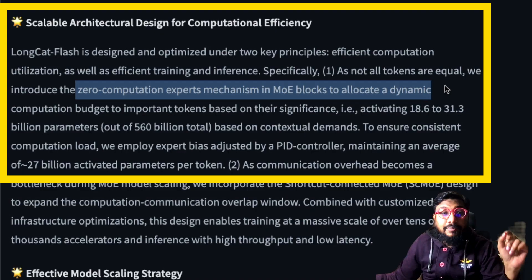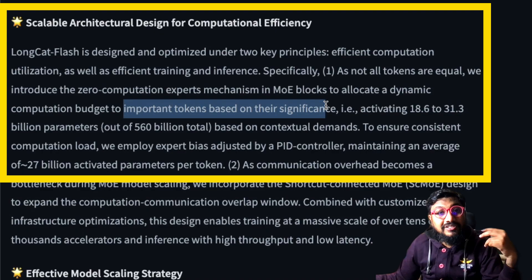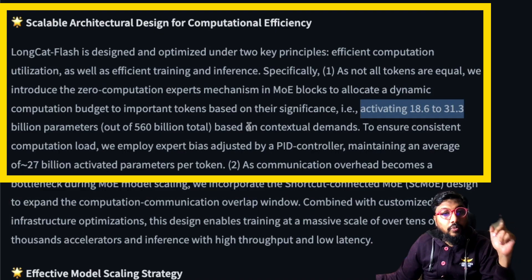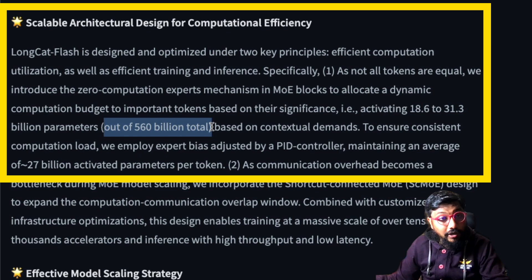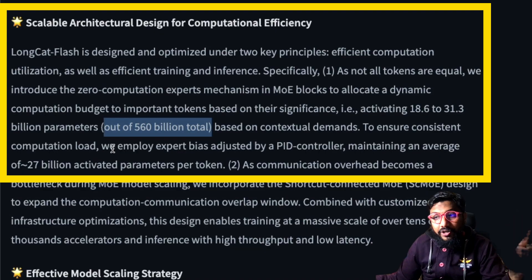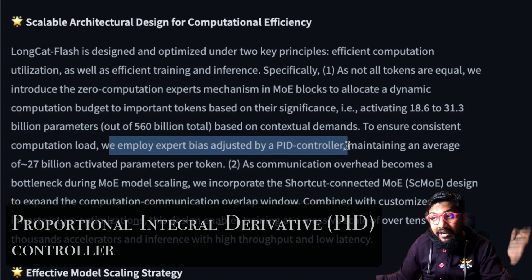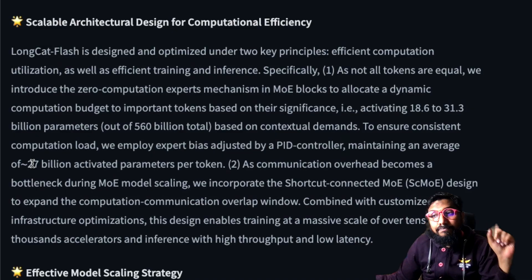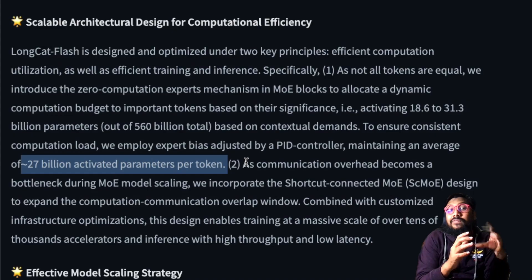This involves activating 18.6 to 31.3 billion parameters out of 560 billion total, based on contextual demands. To ensure consistent computational workload, they employ expert bias adjusted by a PID controller, maintaining an average of just 27 billion activated parameters per token.